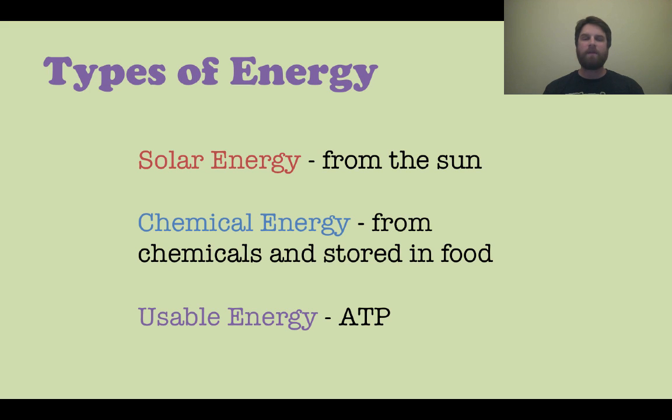Let's talk about some types of energy so we can familiarize ourselves with them. Solar energy comes from the sun, and we're going to talk about that in photosynthesis. Chemical energy comes from chemicals or is stored in food, and then usable energy in the form of ATP, adenosine triphosphate. That is the energy currency of the cell and what it uses to carry out its cellular processes.